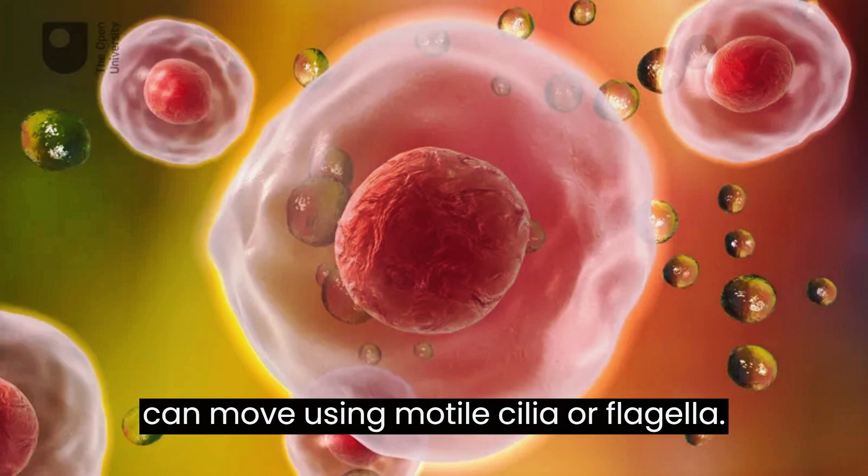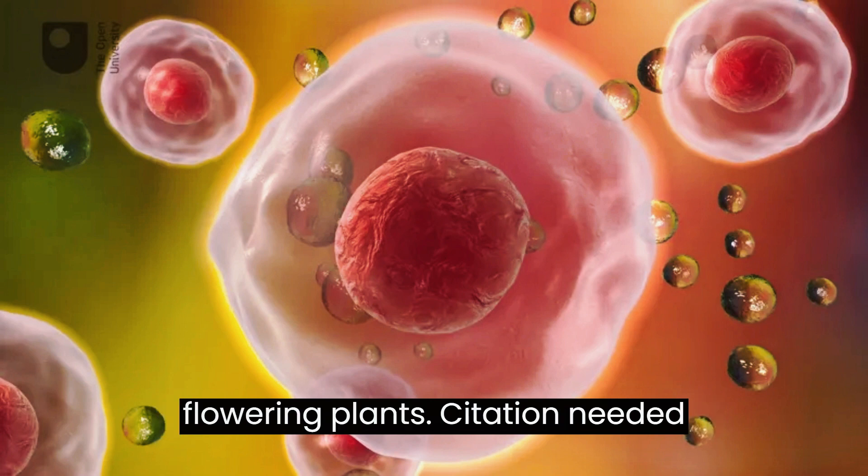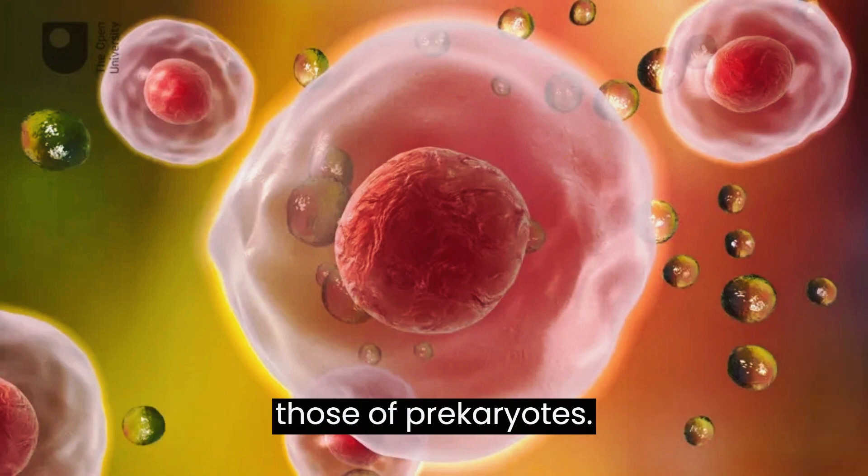Motile eukaryotes can move using motile cilia or flagella. Motile cells are absent in conifers and flowering plants, citation needed. Eukaryotic flagella are more complex than those of prokaryotes.